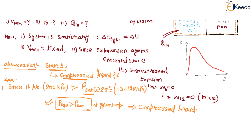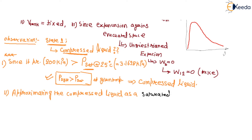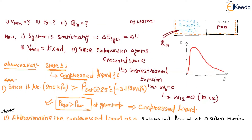The second approximation: when the fluid is present in the compressed region, we approximate the compressed liquid as a saturated liquid at the given temperature. So all the properties of the compressed liquid correspond to those of a saturated liquid at that temperature. On the PV diagram, the initial state is in the compressed liquid region at 200 kilo Pascal.